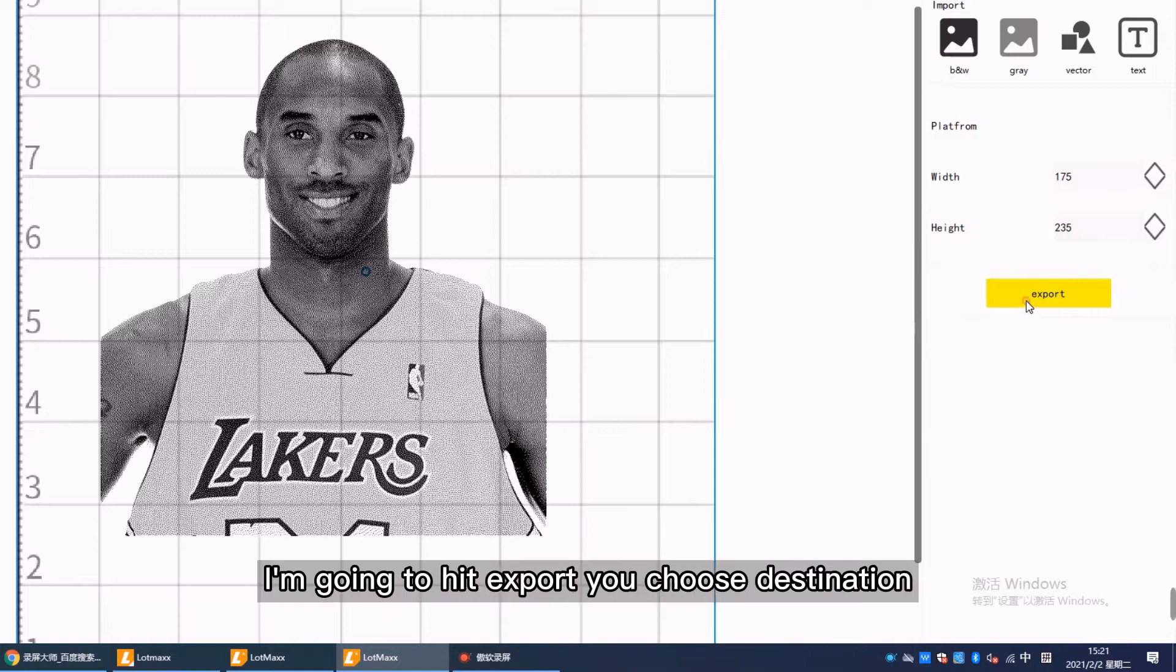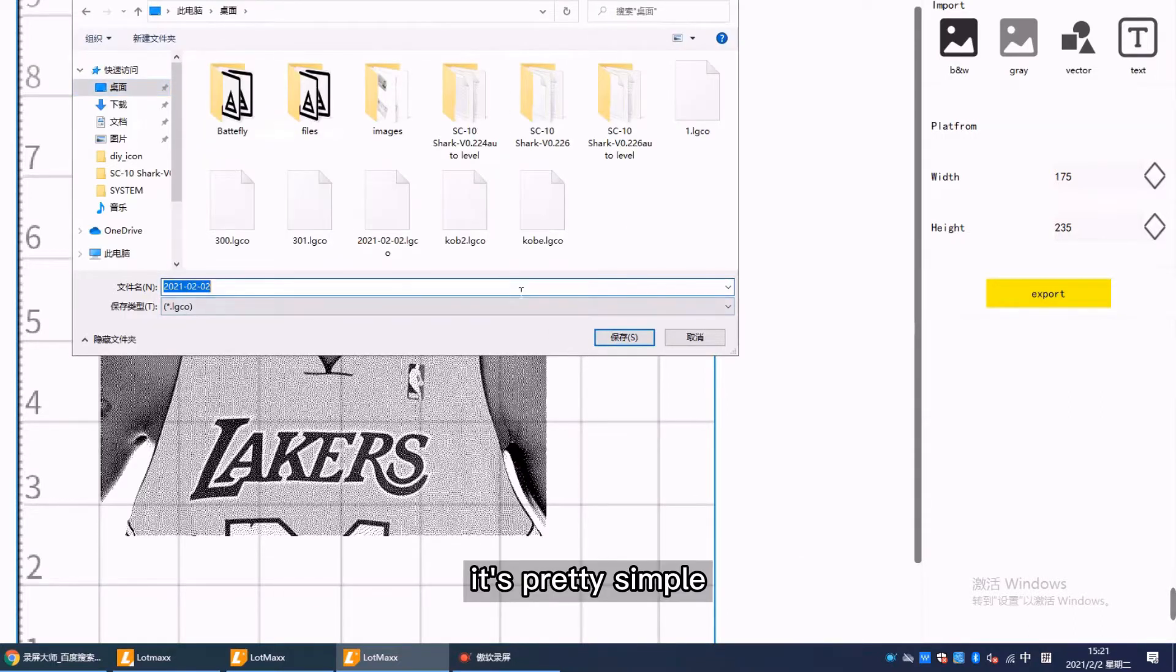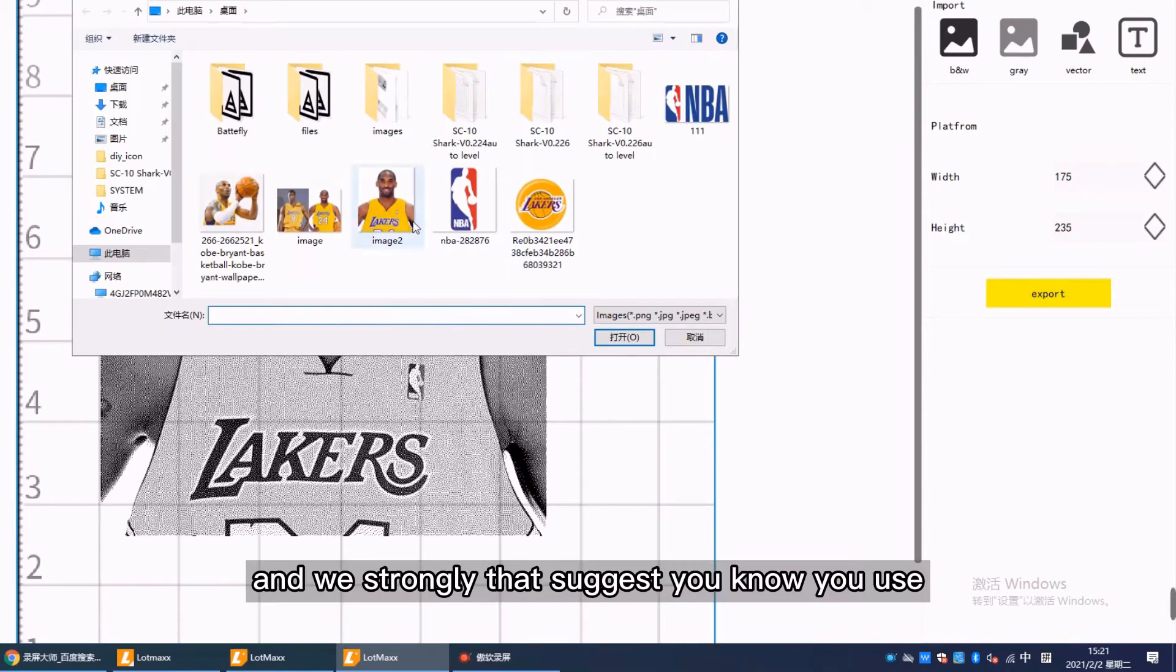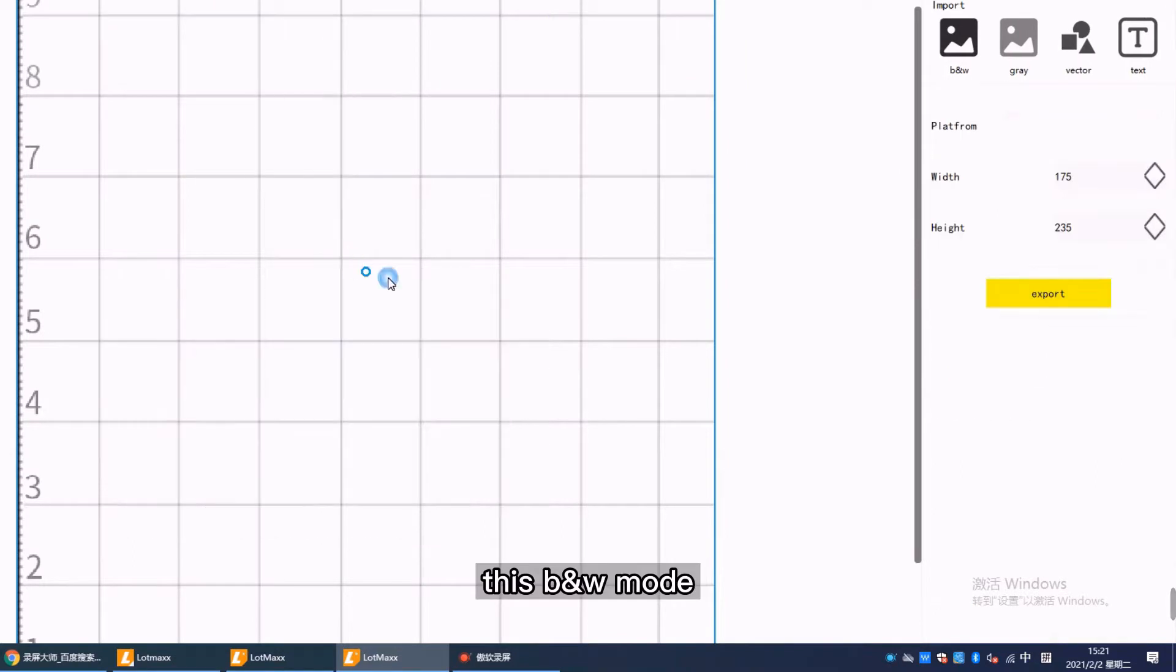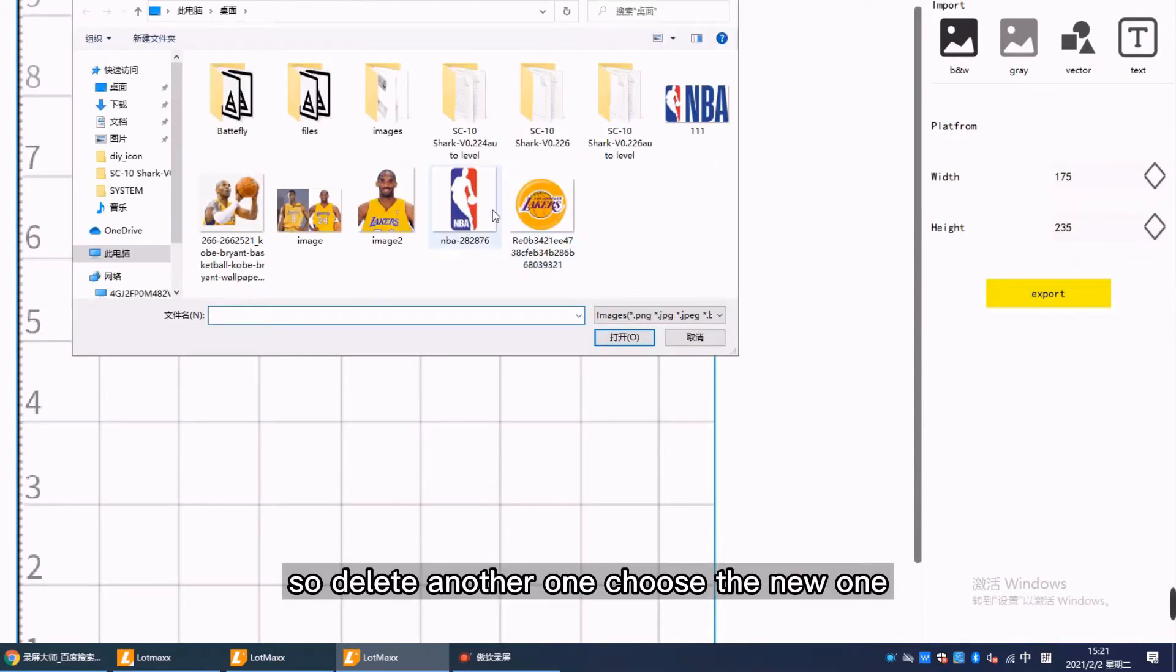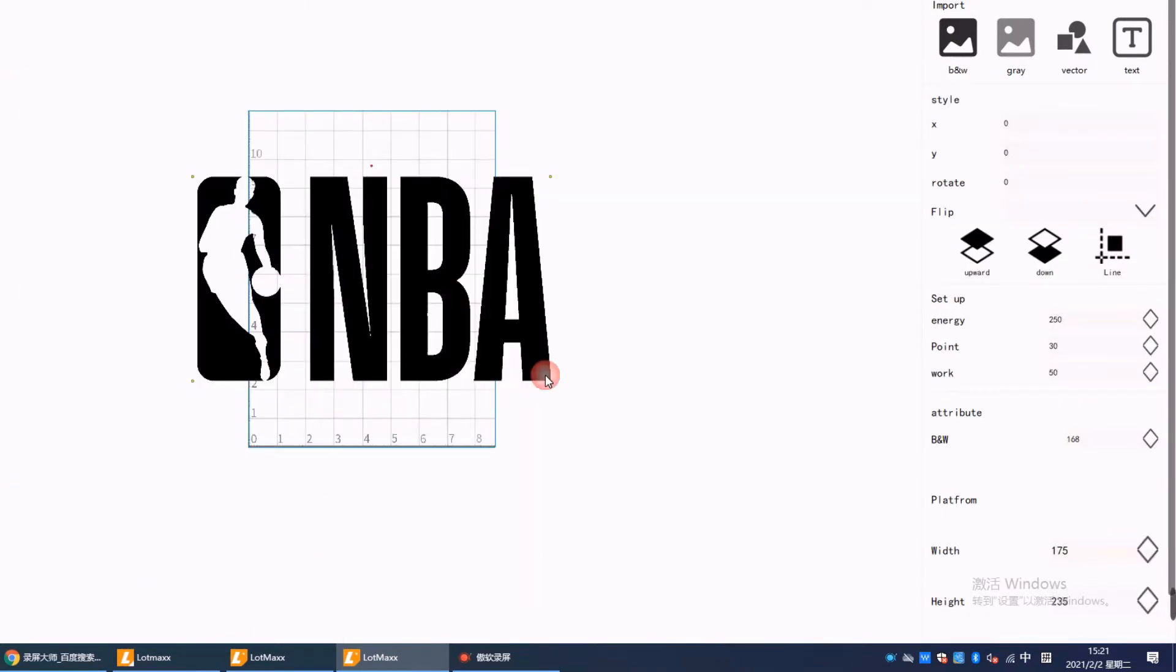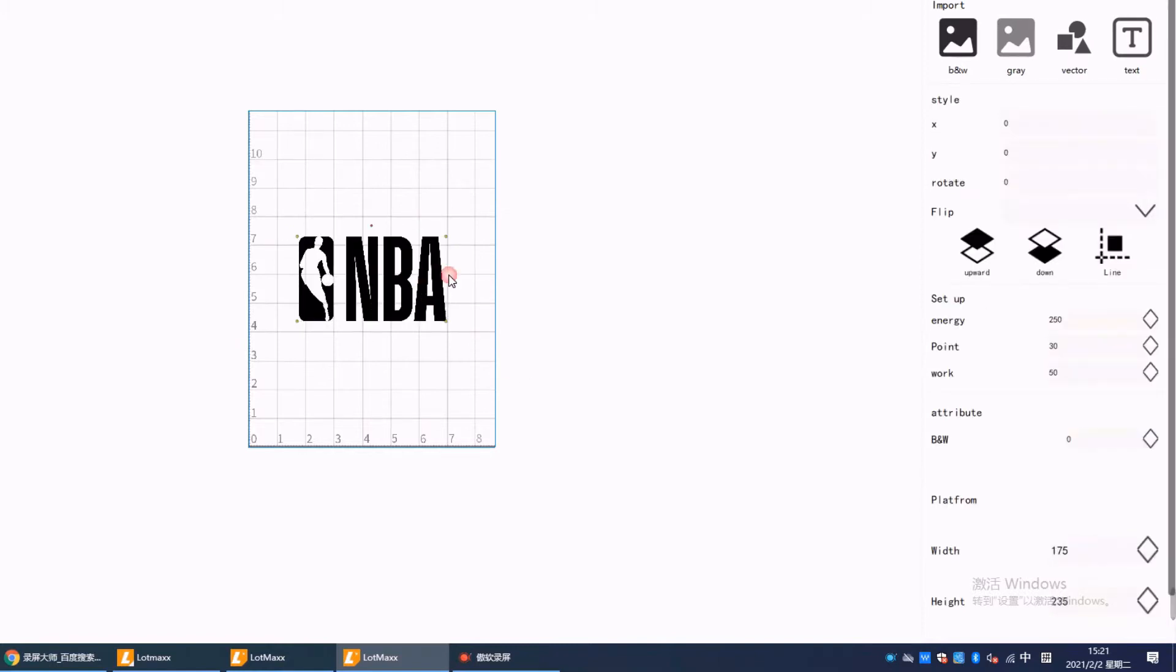When it is done I'm going to hit export and choose the destination to save the file. It's pretty simple. If you want to do some logo, it's pretty simple. We strongly suggest you use this BMW mode. I'll delete another one, choose the new one, and I'm choosing this BMW logo.